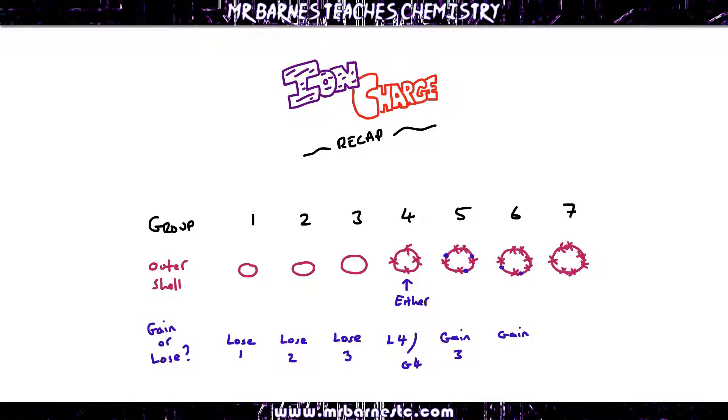Group 6, it's easier to gain 2 electrons than lose 6. Group 7, easier to gain 1 than lose 1. So once you know whether an element wants to lose or gain and how many, the next thing to remember is that the charge for everything that loses becomes positive, and everything that gains becomes negative. Then the charge is just how many it loses or gains.